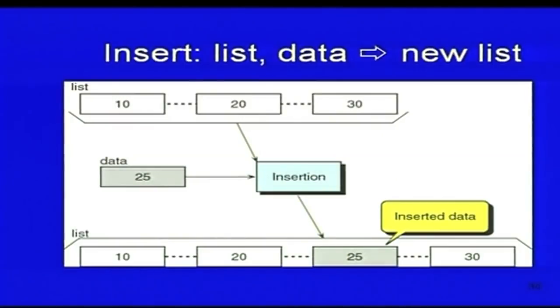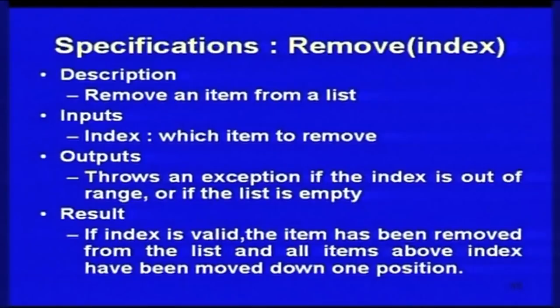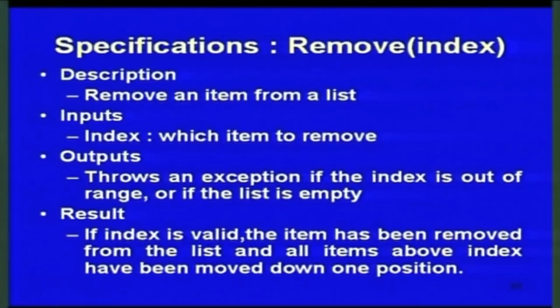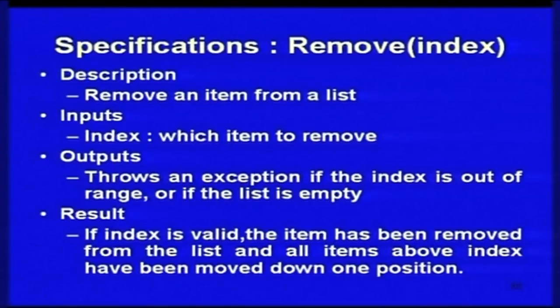Let us look at the insertion operation in detail. If I want to insert element 25 at the second position, and the initial list is [10, 20, 30], then after the insertion operation I get [10, 20, 25, 30]. Now 25 has been added to the list. Next is remove. The input is the index — the item to be removed and its index. If you give an index out of range, it will throw an error. If the index is valid, the item is removed and all subsequent items in the list move one position down.